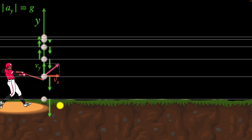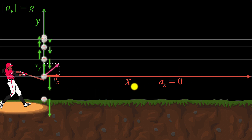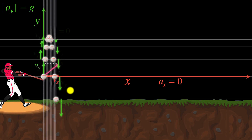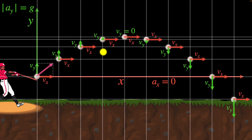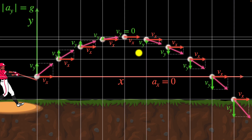Along with the vertical motion, the ball is also traveling forward at a constant velocity, which means all these snapshots will be equally spaced apart horizontally. Just like before, labeling the horizontal axis as x, the acceleration in the x-direction is zero. We can visualize the combined motion: the vertical velocities change while the horizontal velocity is constant everywhere, and combining them gives us the complete path of the baseball.